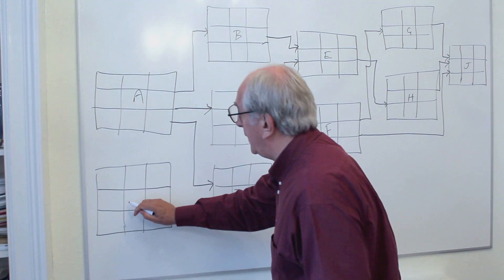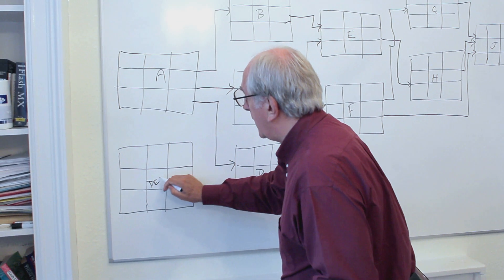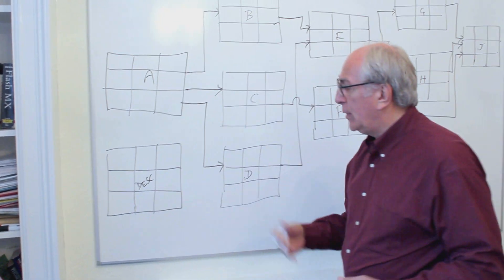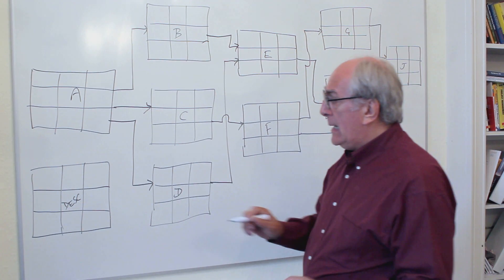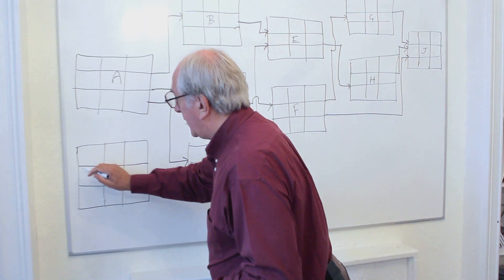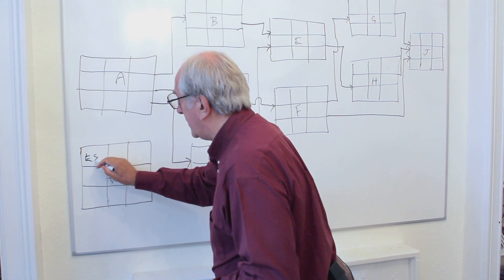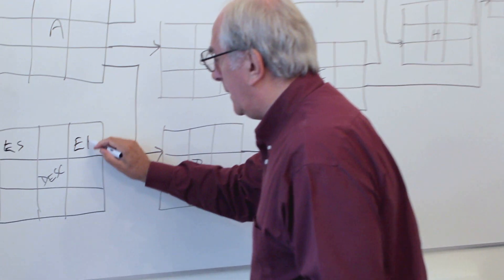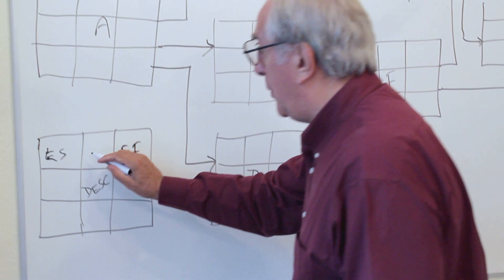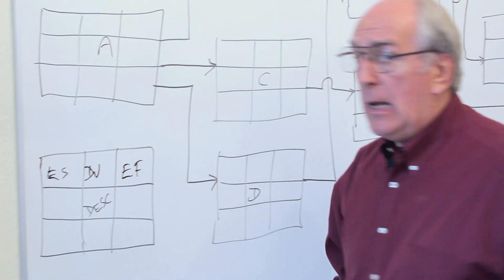I'm going to put the description in here. We could also call that an activity number if we wanted to. We could put that somewhere else. In this cell we're going to put the early start and we'll put the early finish for that job. We'll put in here the duration.